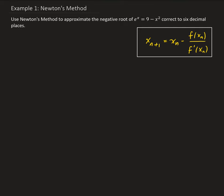In this example, we're going to use Newton's method to approximate the negative root of e to the x equals 9 minus x squared, correct to six decimal places. We need to first pick an initial guess. The initial guess I'm going to use here is negative 2, so we're going to let x₁ be equal to negative 2.